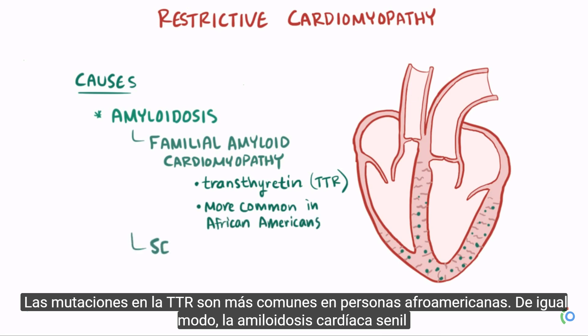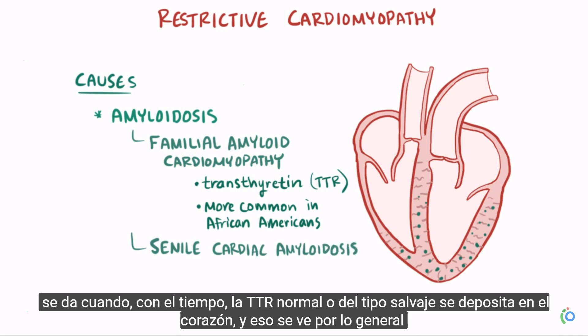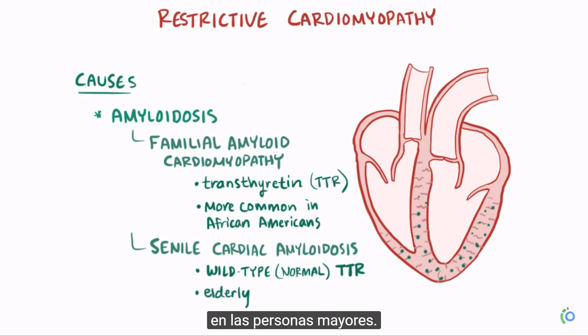Similarly, senile cardiac amyloidosis is where, over time, wild-type, or normal, TTR deposits in the heart, and this is typically seen in the elderly.